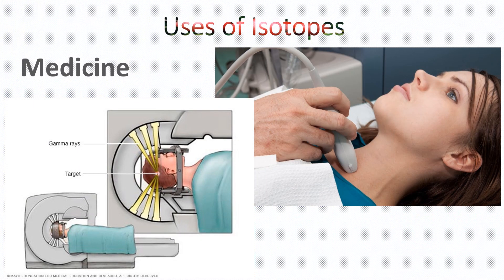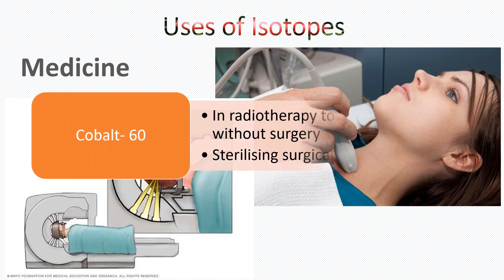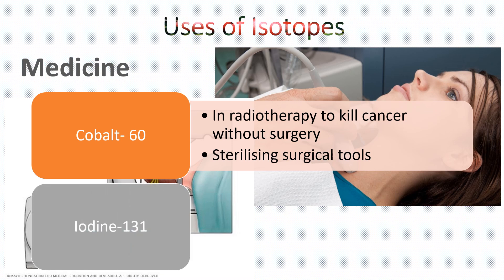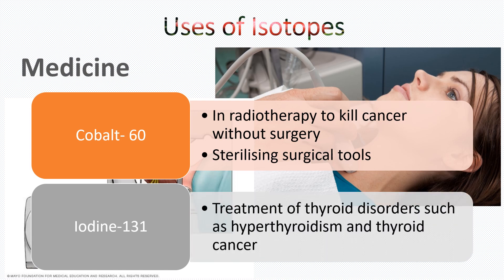Now let's look at the uses of isotopes. Isotopes are widely used in many fields. In medicine: cobalt-60 is used in radiotherapy to kill cancer without surgery, and for sterilizing surgical tools. Iodine-131 — written as shown — is used in the treatment of thyroid disorders such as hyperthyroidism and thyroid cancer.